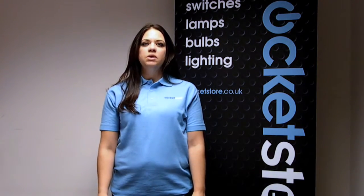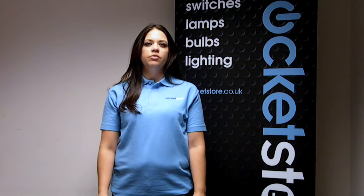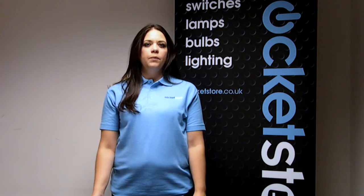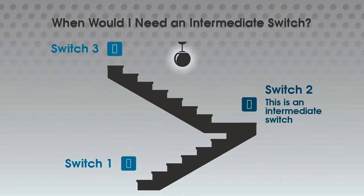An intermediate switch is required when you have three switches controlling one light. For example, when you have a switch at the bottom of your stairs, a switch in the middle of your stairs, and a switch at the top of your stairs. The switch in the middle would then need to be an intermediate switch to enable the light to be switched on and off independently.